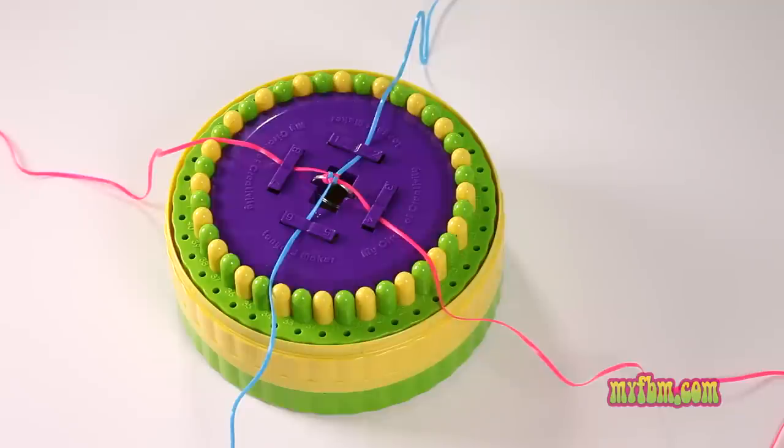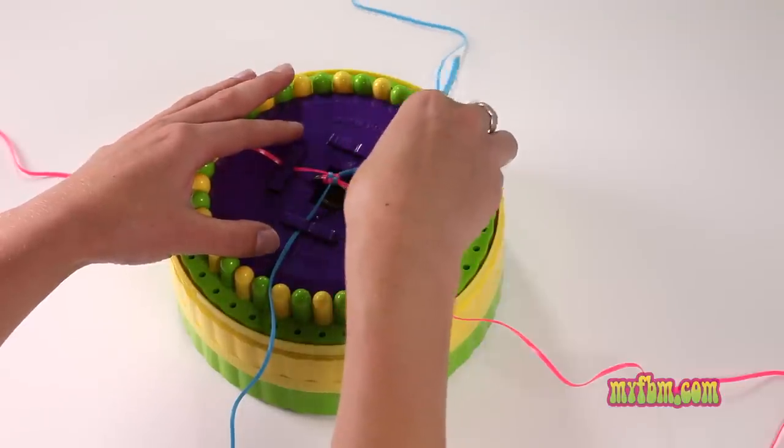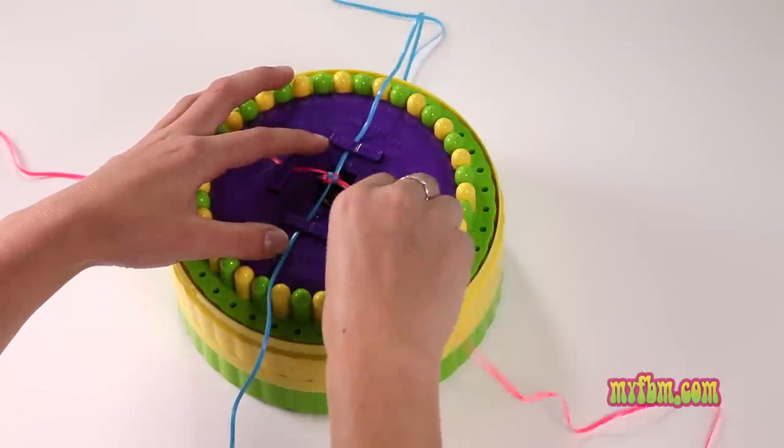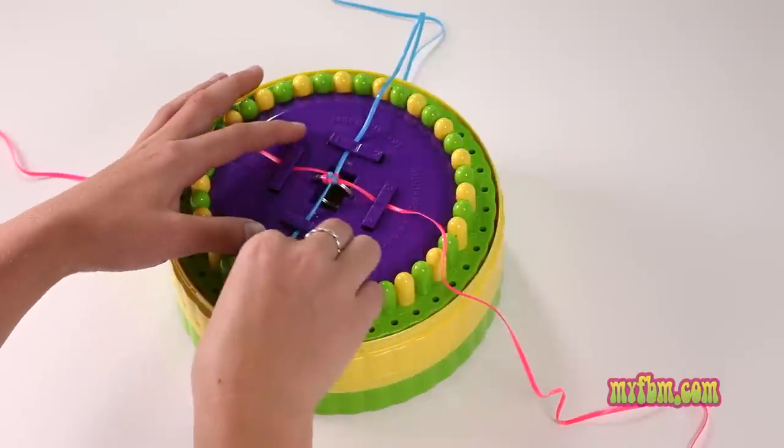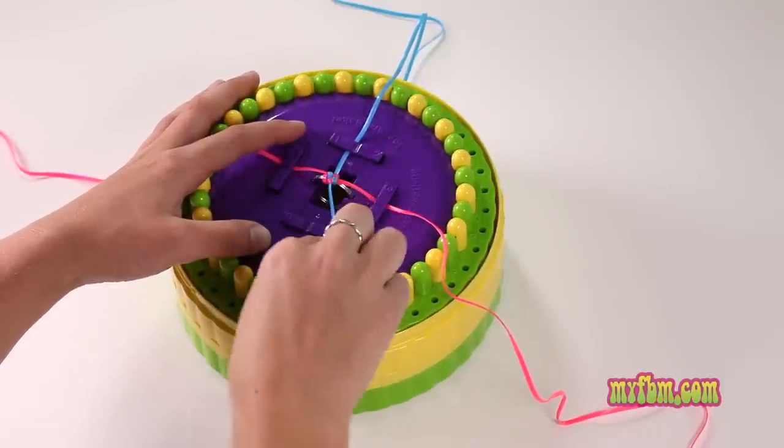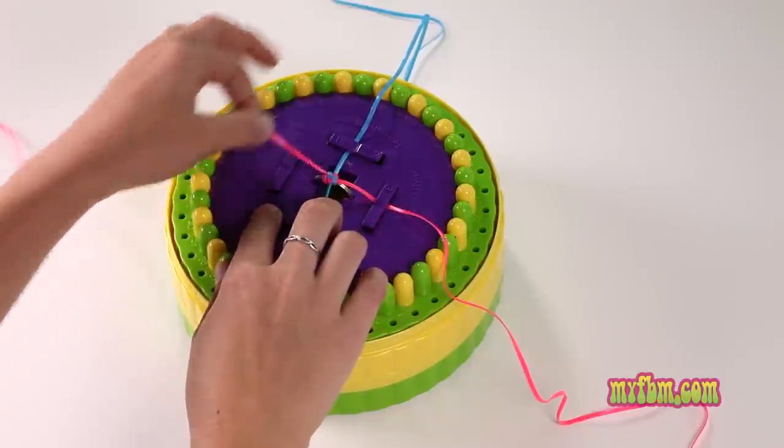You should have a string in the holders 2, 4, 6, and 8. Before starting the spiral knot, you need to rotate your strings. Move the 2 to the 1, 4 to 3, 6 to 5, 8 to 7.